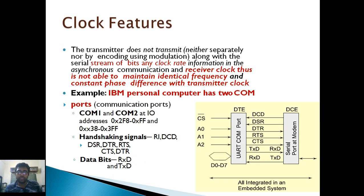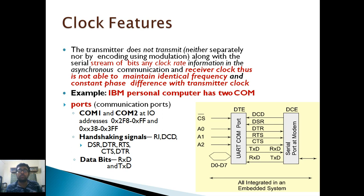Today we are going to describe the clock features in case of synchronous serial input-output, where we use clock signal to conduct the communication of different kinds of data synchronously. The clock feature is that the transmitter does not transmit the clock — neither separately nor by encoding using modulation. In asynchronous communication, any clock rate information will not be shared along with the serial stream of bits.